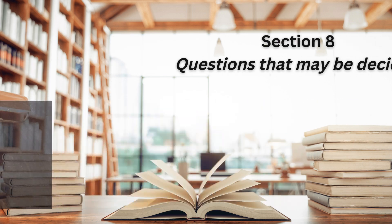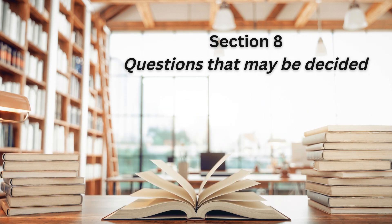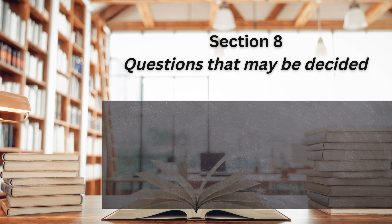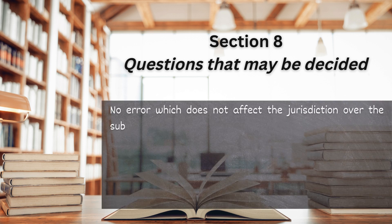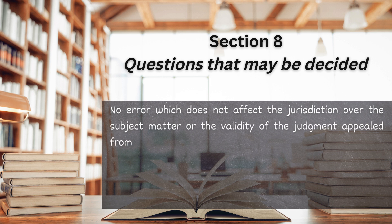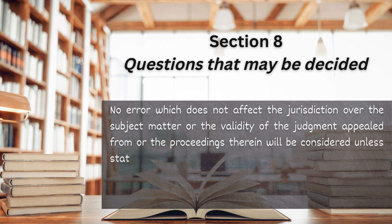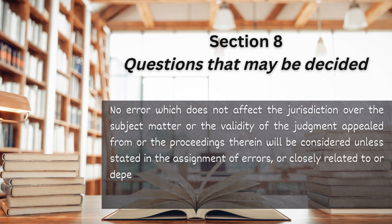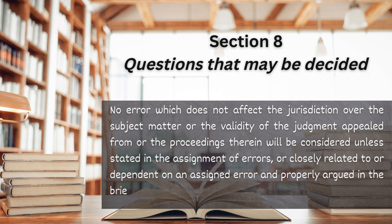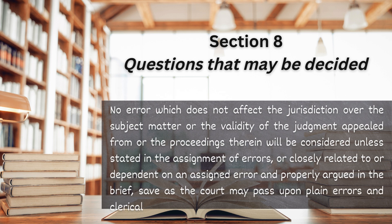Section 8. Questions that may be decided. No error which does not affect the jurisdiction over the subject matter, or the validity of the judgment appealed from, or the proceedings therein, will be considered, unless stated in the assignment of errors, or closely related to or dependent on an assigned error, and properly argued in the brief, save as the court may pass upon plain errors and clerical errors.